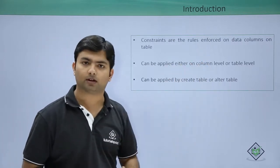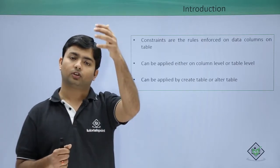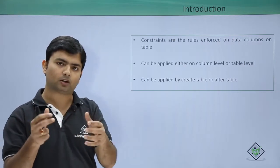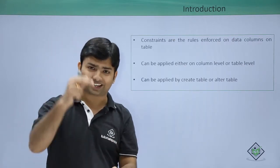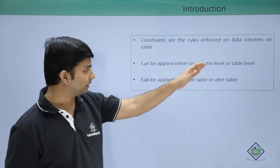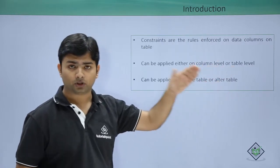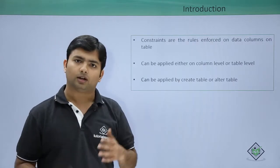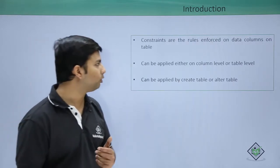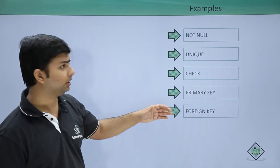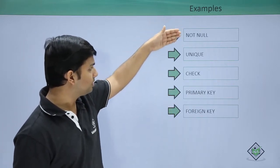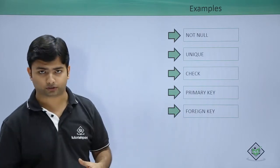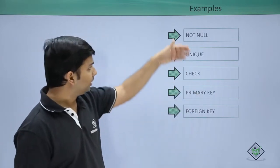But once you have defined all the columns of the table and you are planning all the constraints right after that inside the create table, that is a table level constraint. So there are two ways where we can add the constraints. Now let's see what all available options we have for the constraints. Here you can see: NOT NULL, UNIQUE, CHECK, PRIMARY KEY, and FOREIGN KEY are the options.